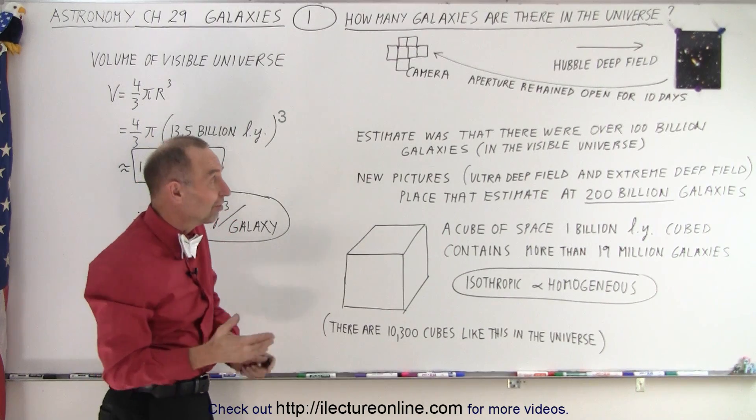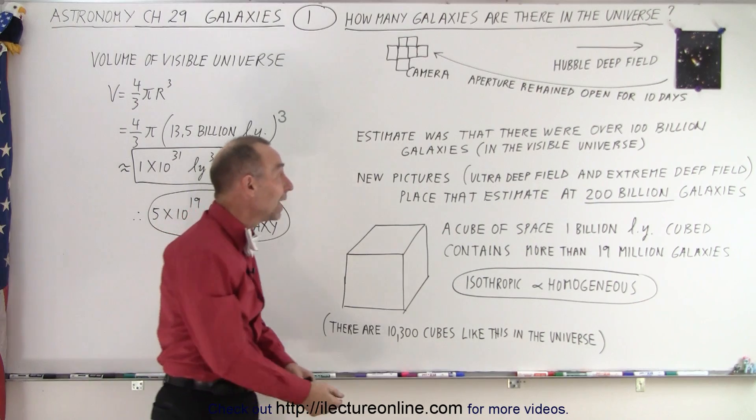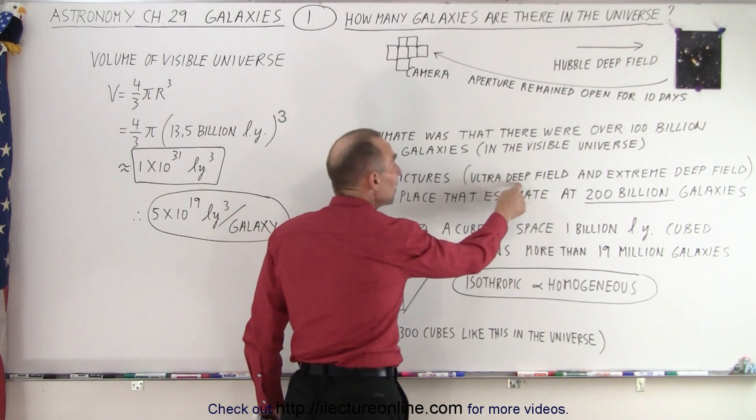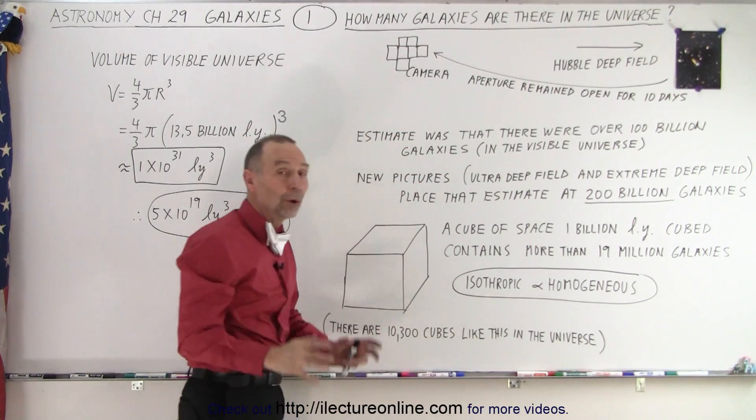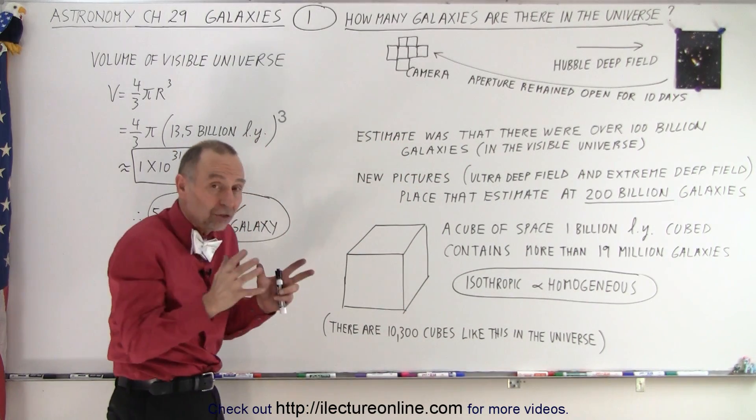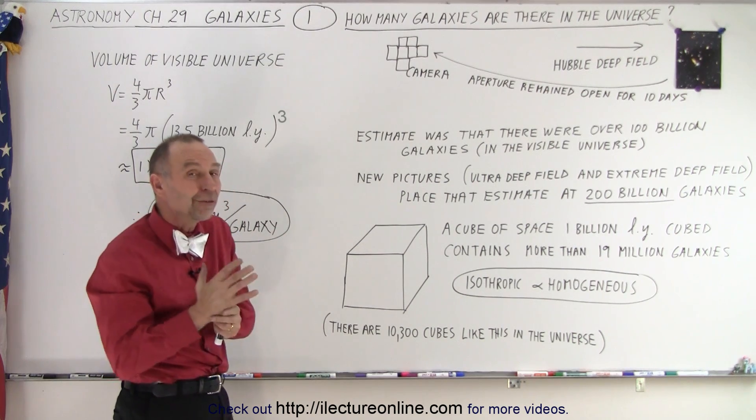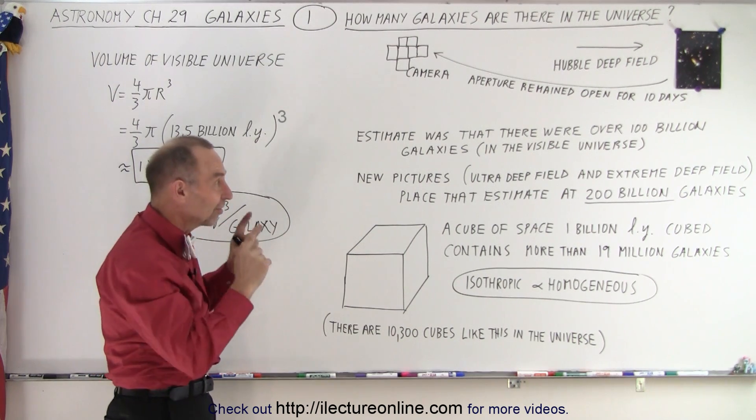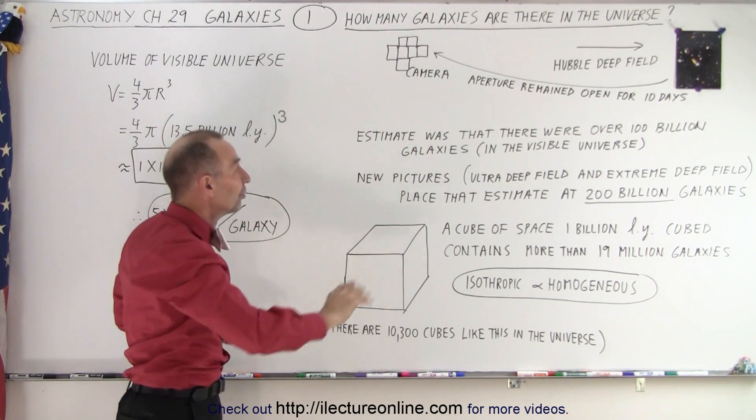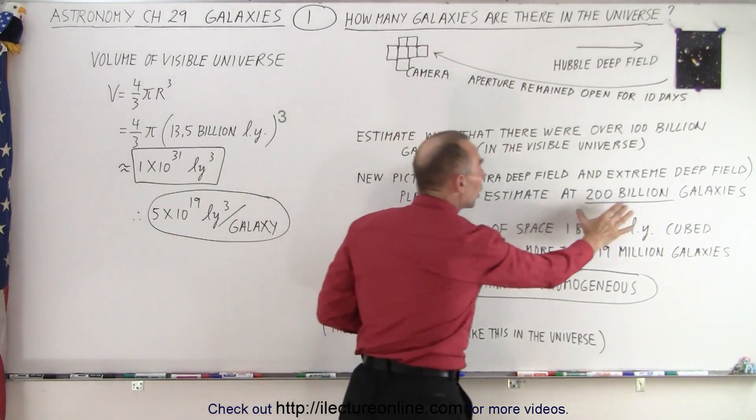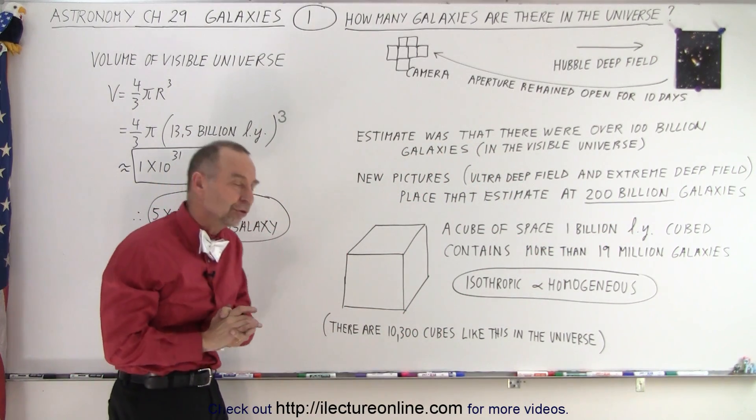And then of course, we did it again but this time with better equipment we left the lens open for a very long time and we took the picture called the ultra deep field picture and ultimately the extreme deep field picture where the number of galaxies on the single picture, it was a bigger slightly wider field of view but there were well over 10,000 galaxies on that single picture. Again, when we estimated the total number of galaxies in the universe it had to be about 200 billion galaxies and that is in the visible portion of the universe alone.